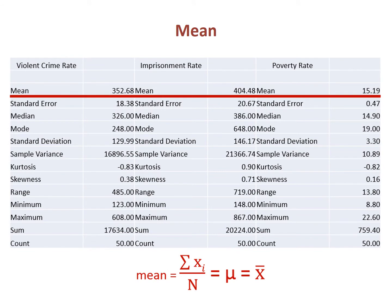The arithmetic measure of central tendency is the mean, or arithmetic mean, or more commonly what we call the average. The typical state has a mean violent crime rate of 352.68, an imprisonment rate of 404.48, and a poverty rate of 15.19%. The formula for the mean has the sum in the numerator, divided by n. The mean is often symbolized using the Greek letter mu, or x with a line over it, called x-bar. As an undergraduate, I was taught to use mu for the population mean and x-bar for the sample mean, but I have seen this rule broken so many times that it is essentially meaningless.